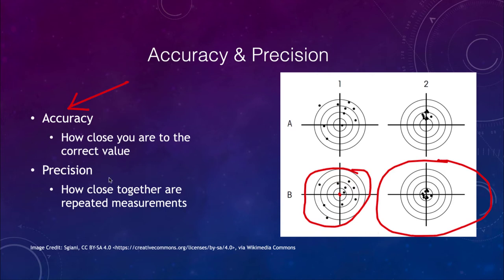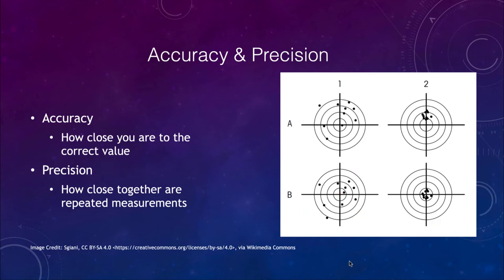This leads us to the second concept, which is precision. Precision is how close the measurements are repeated to each other. Something with high precision is going to have a very tight cluster of values. We see that in the lower right-hand side — that one has very high precision. Precision increases as you move to the right, so those on the left have low precision and those on the right have high precision.